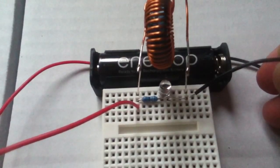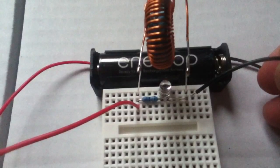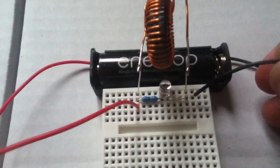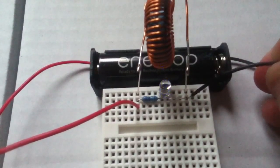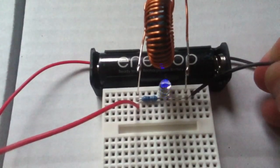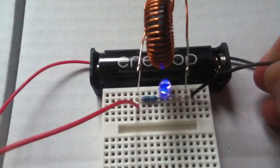And then as it fills with current and a magnetic field develops in the ferrite, it then becomes a dead short. You can probably see some sparks coming out of the point where I'm touching that negative lead.